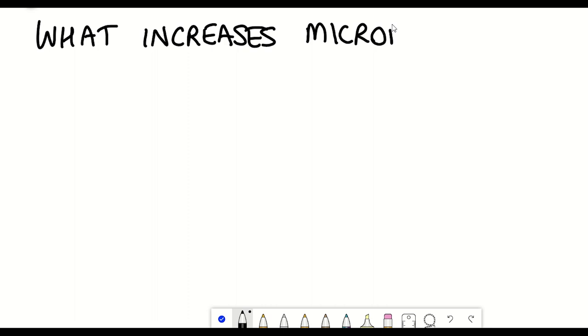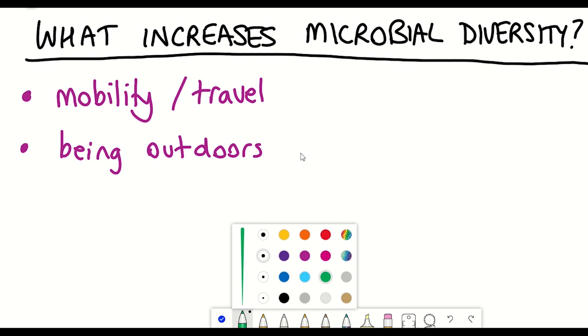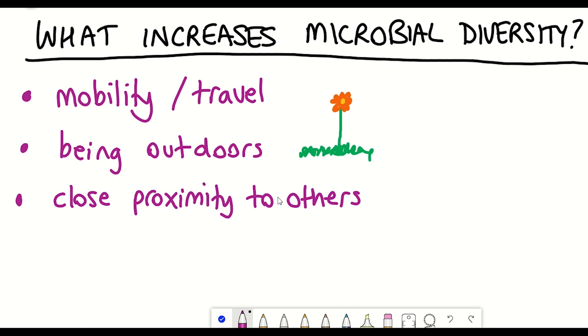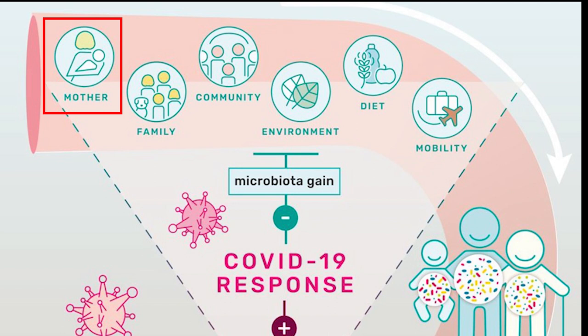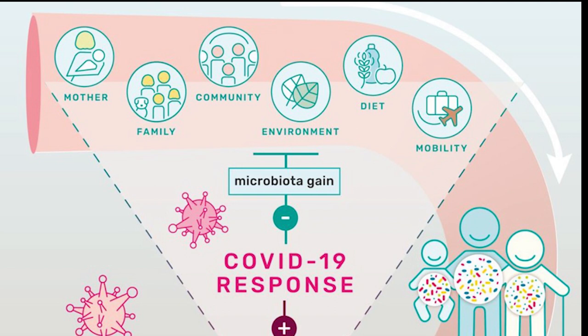So there are many different environmental factors that can foster microbial diversity. And so this includes mobility and the ability to travel, being out in the environment, being in close proximity to others, including the wider community and your own family and pets, as well as diets being very critical, which we'll come back to a bit later. And as well, you'll notice that it also says mother and infancy is a critical moment when your microbiome is initially established. And we'll come back to that a little bit later as well.